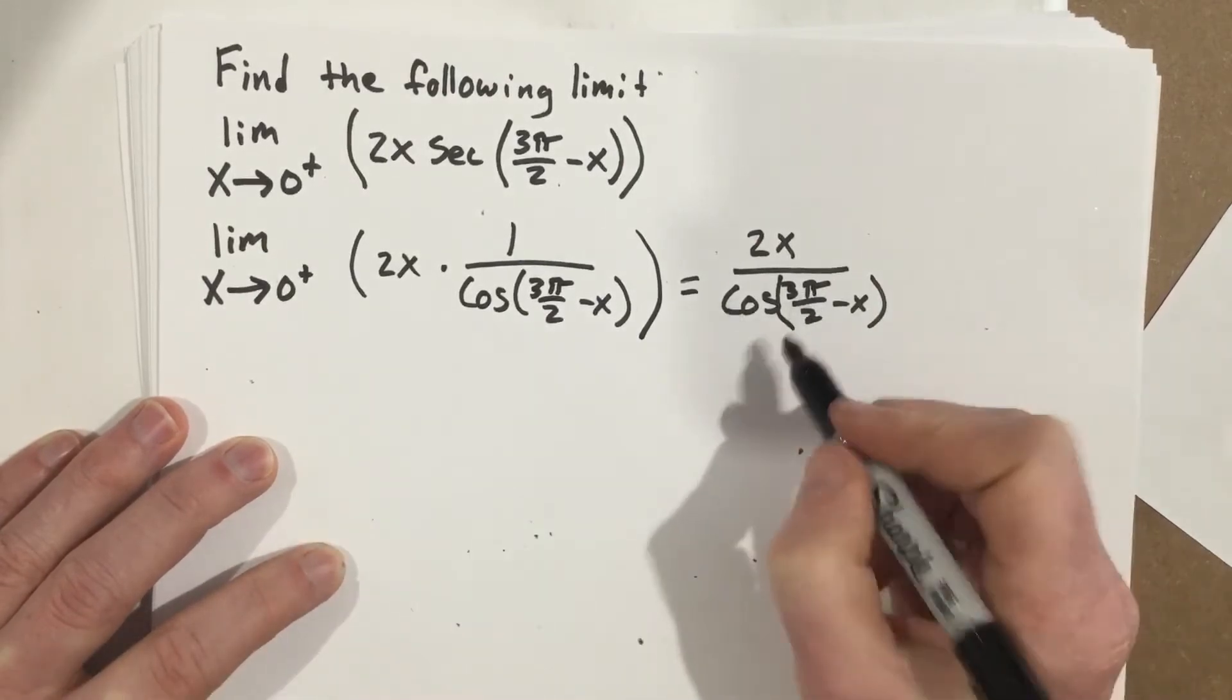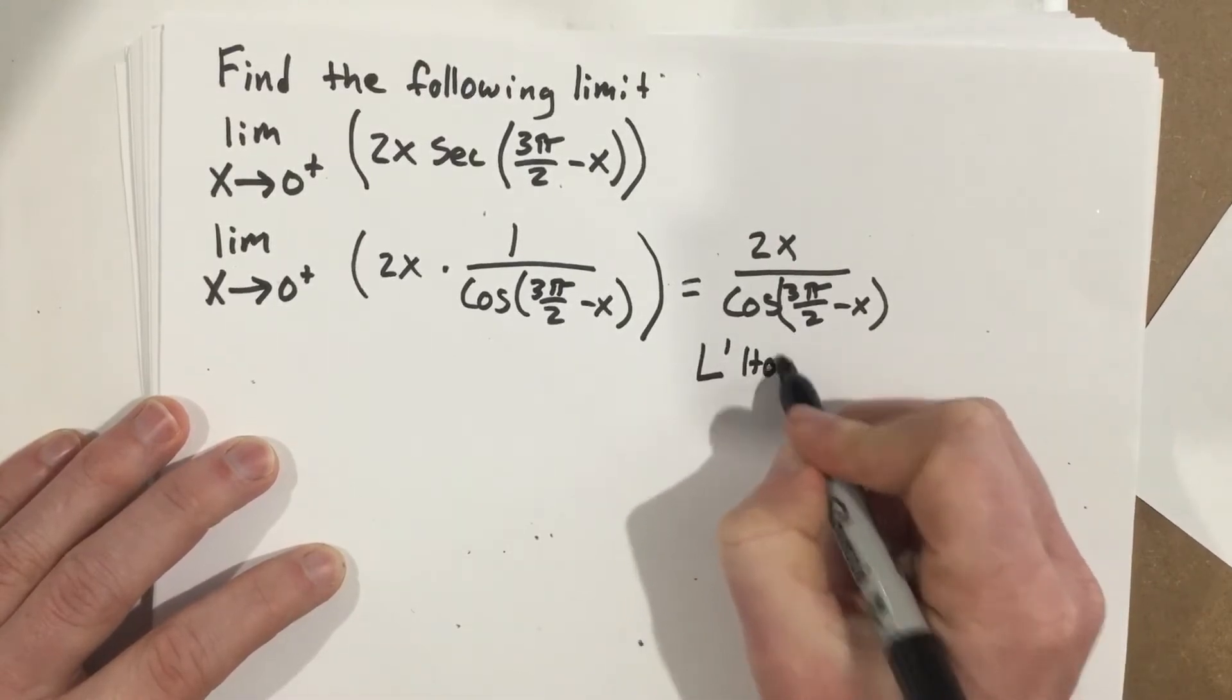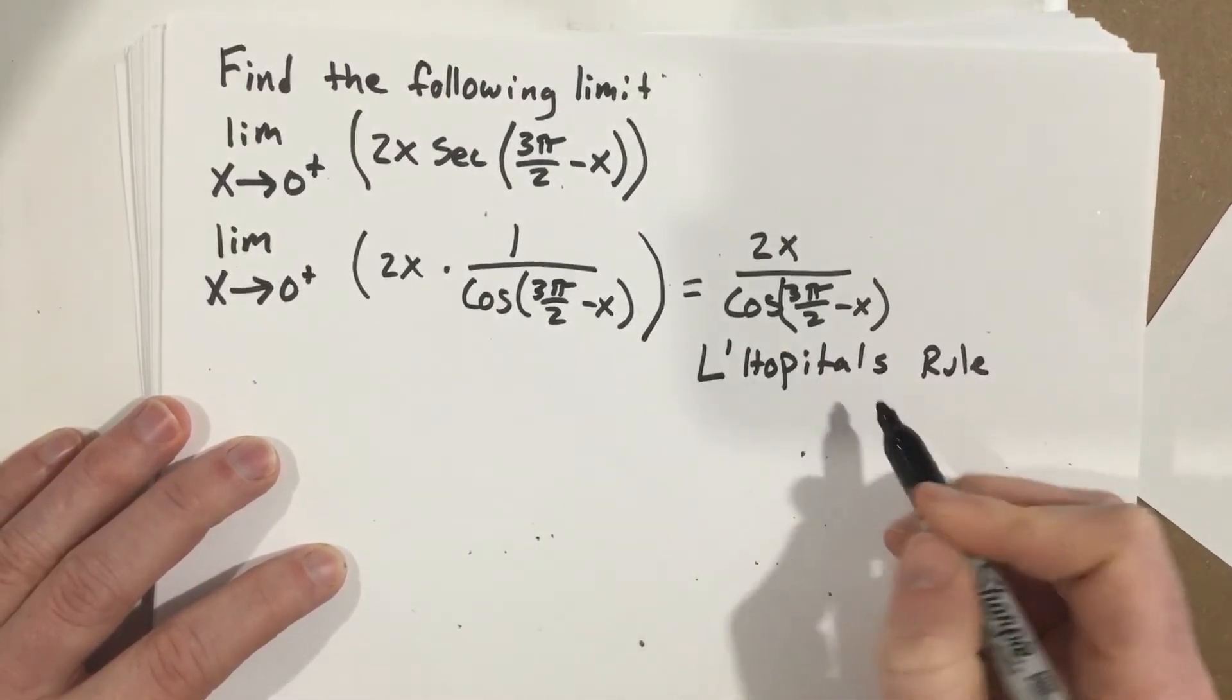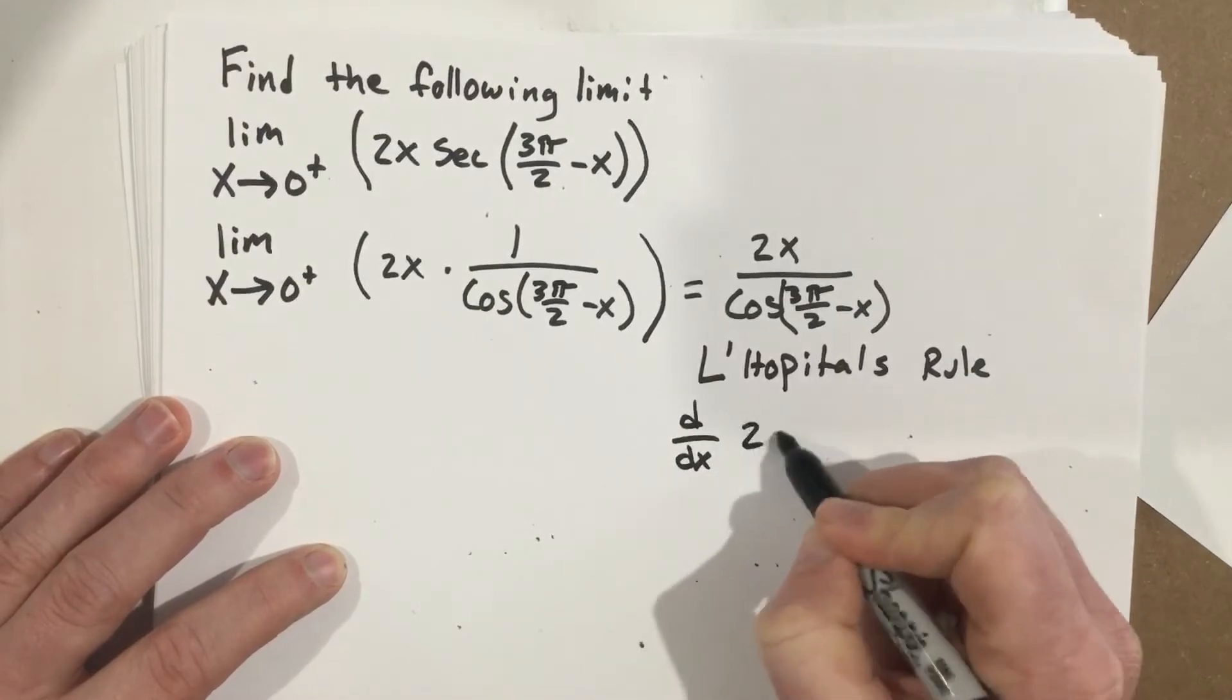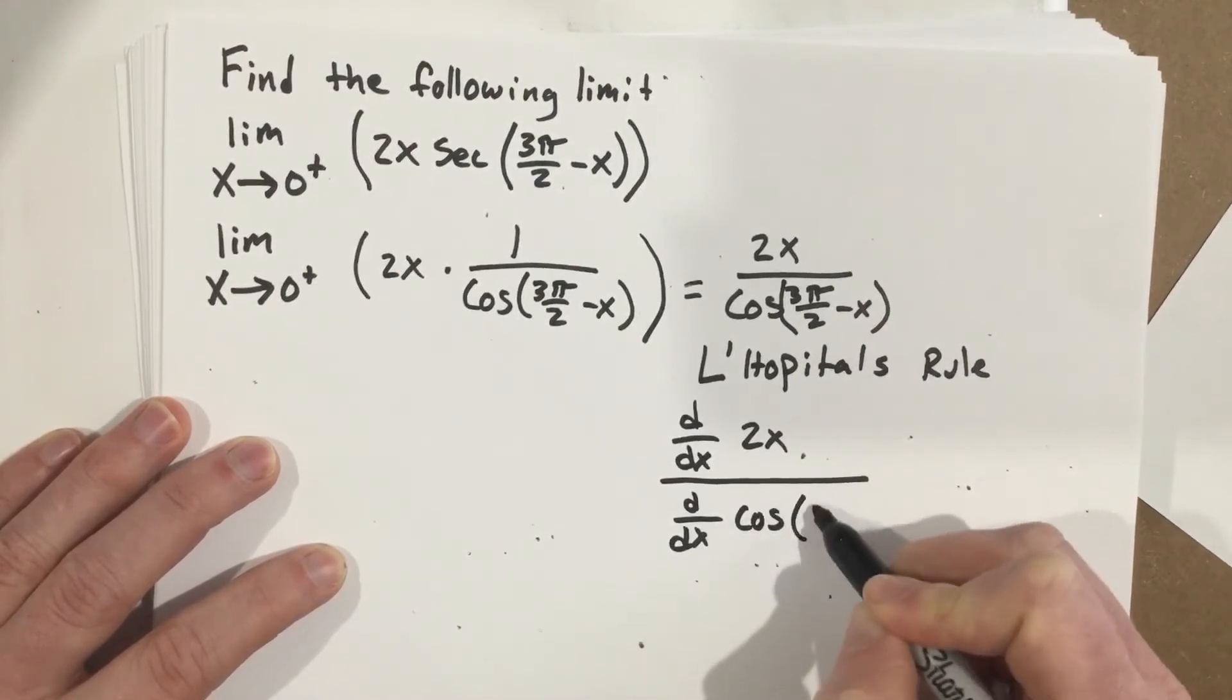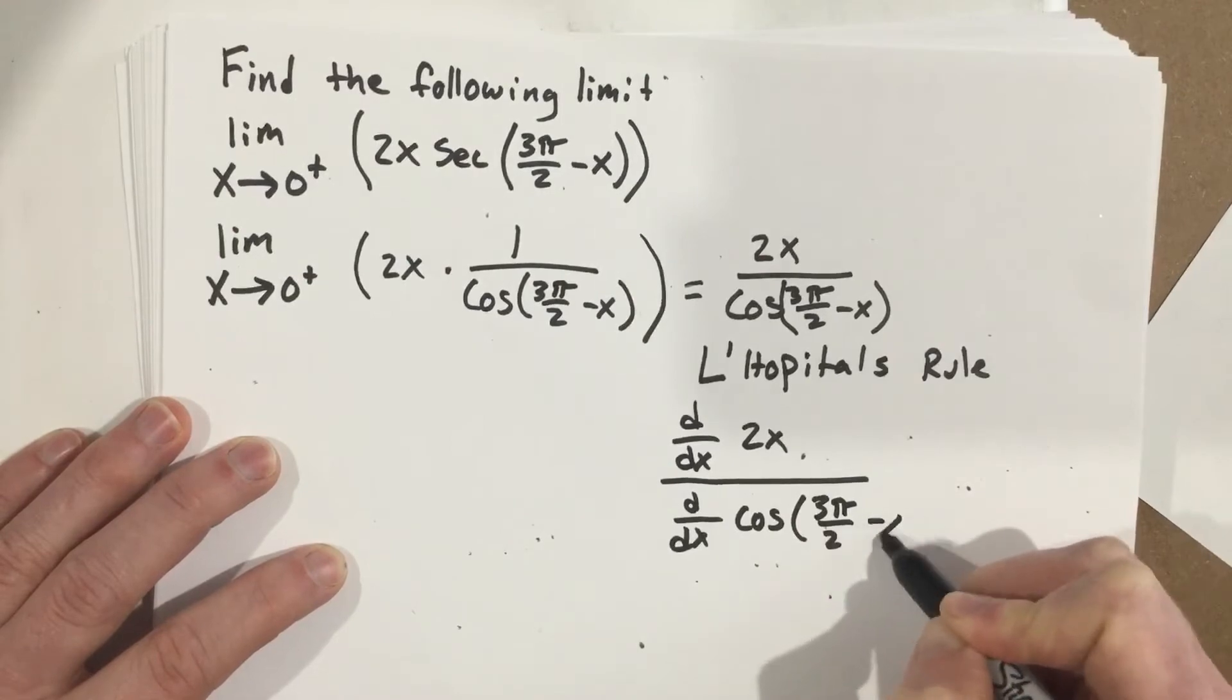And then it gets better because now I have a fraction so I can do L'Hopital's rule. When I do L'Hopital's rule, I get d over dx of 2x and I get d over dx of cosine 3π over 2 minus x.